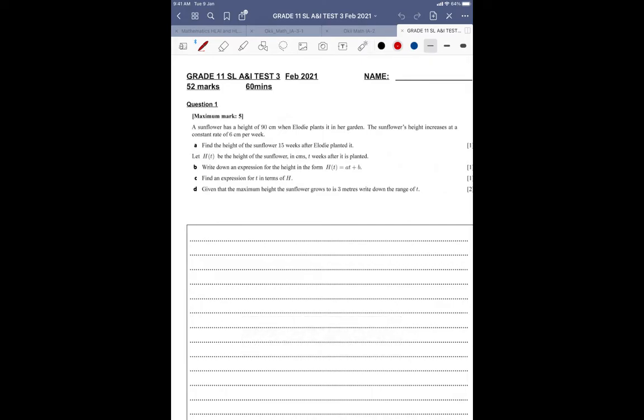All right, first one, find the height of the sunflower 15 weeks. A lot of you got confused by, oh, there's a formula for arithmetic, okay? And the thinking was correct because this is arithmetic, but if you actually just even draw a little picture, there you go, there's your ground.